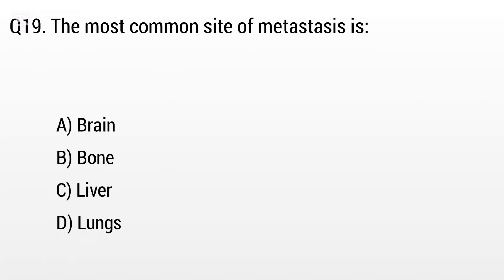Question 19. The most common site of metastasis is: Option A: Brain, B: Bone, C: Liver, D: Lungs. But the right answer is Option D: Lungs.